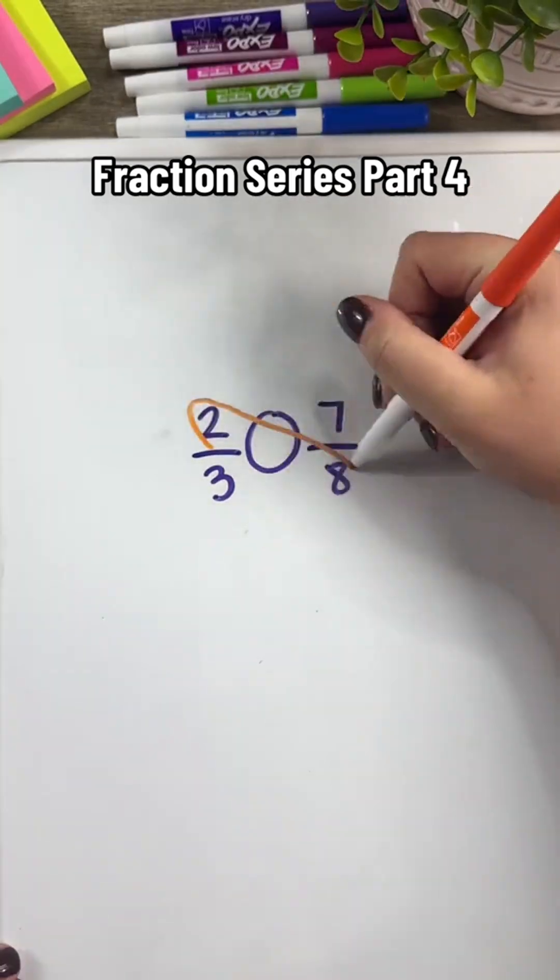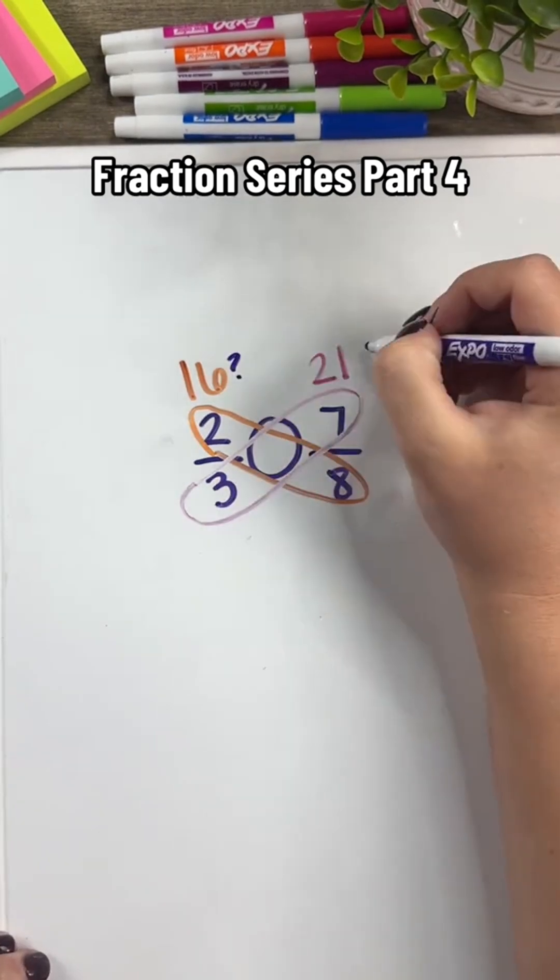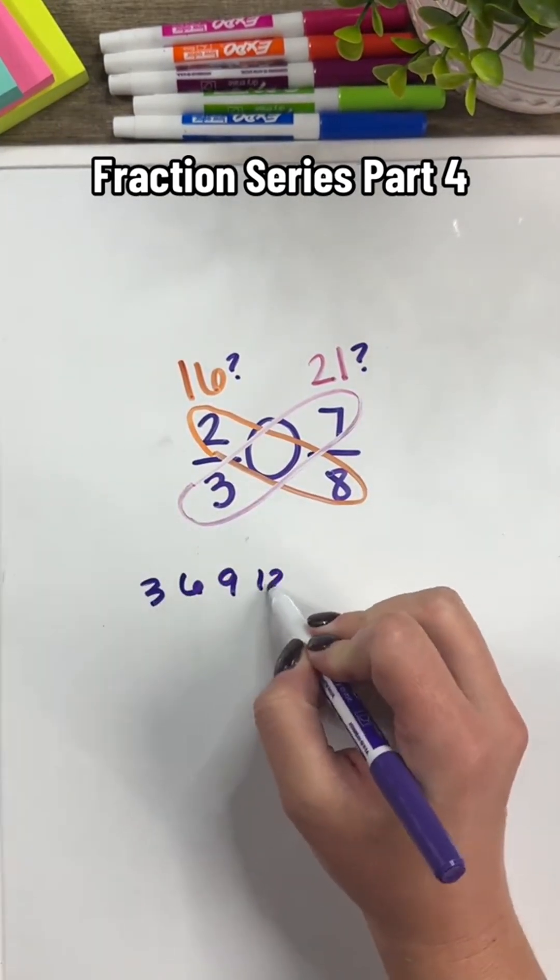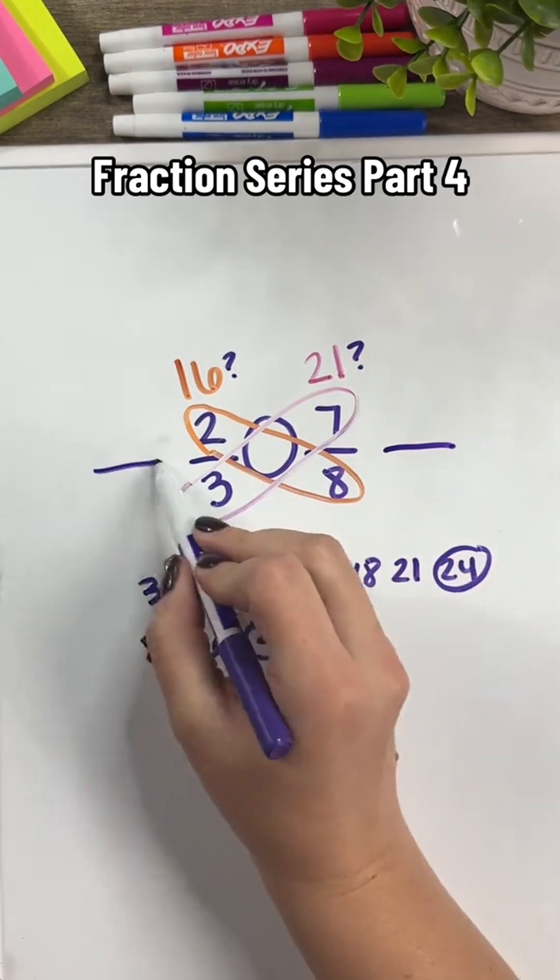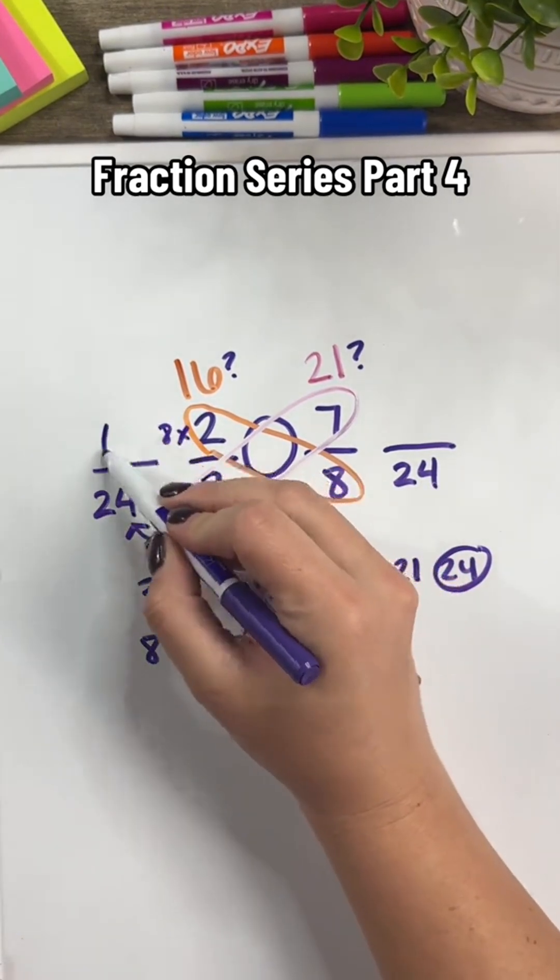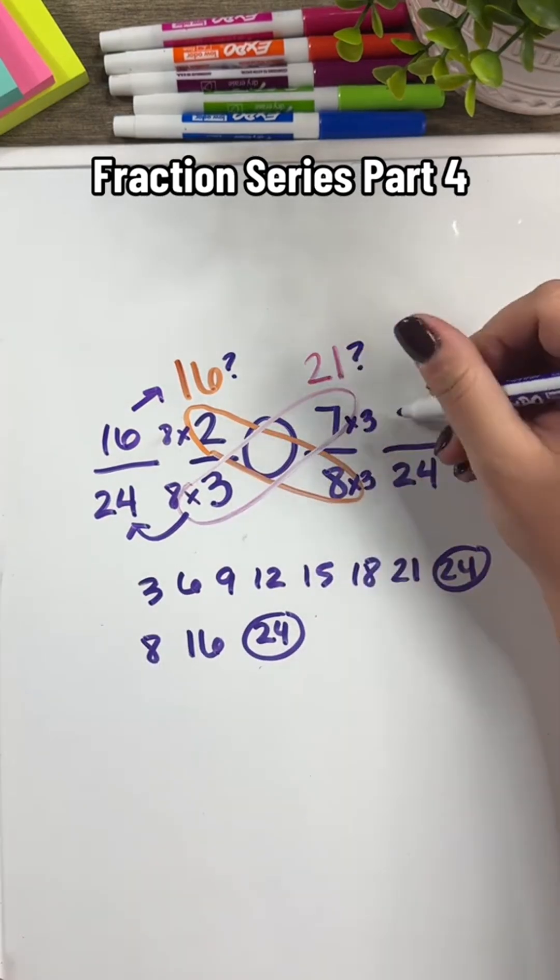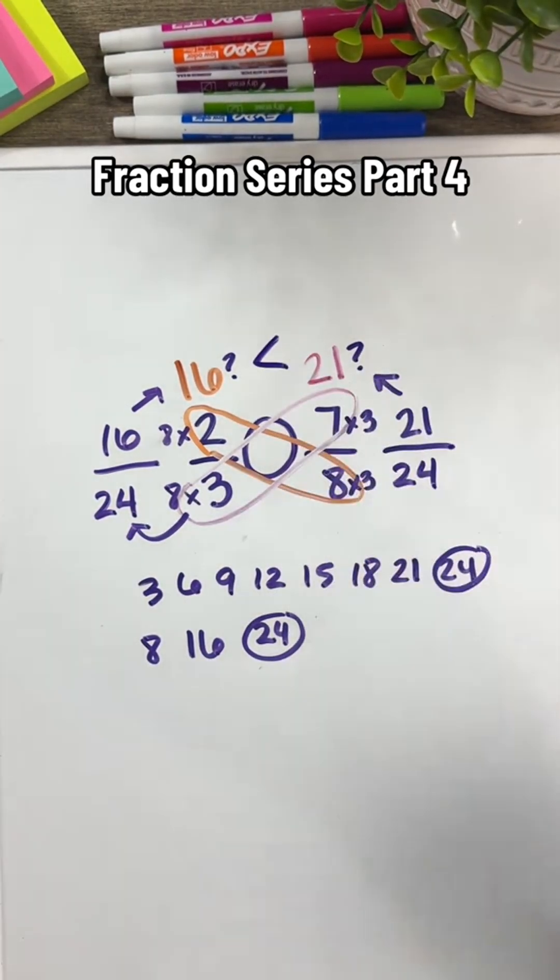Now back to that trick for just cross-multiplying to determine which fraction is greater. I want to show you why that works and where the 16 and 21 are coming from. When I list my multiples for my denominator, I find the common denominator of 24. Then by finding those equivalent fractions, the 16 was my numerator and 21 is my other numerator. So we essentially just use that common denominator strategy.